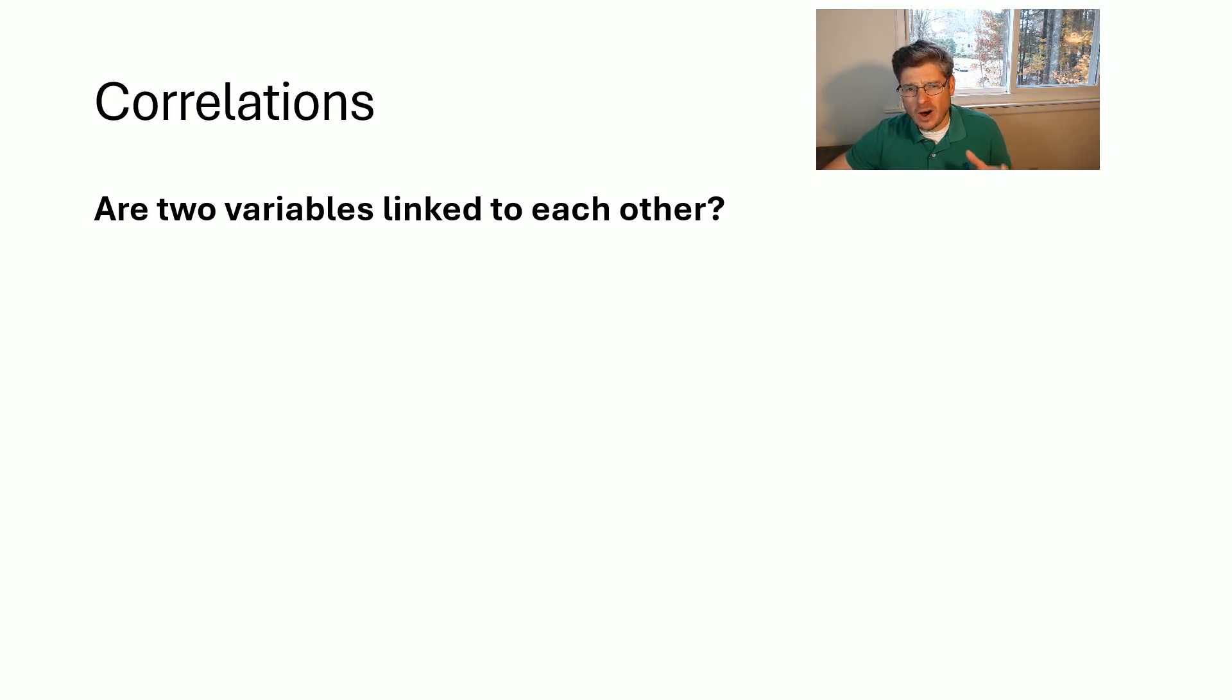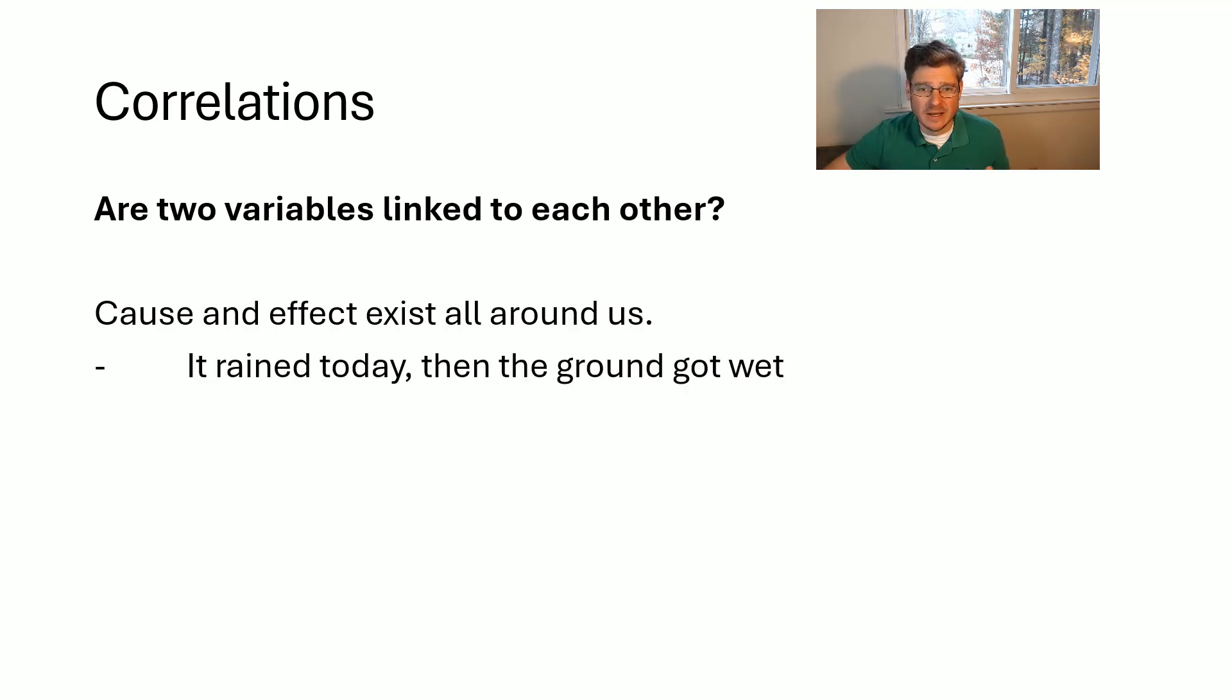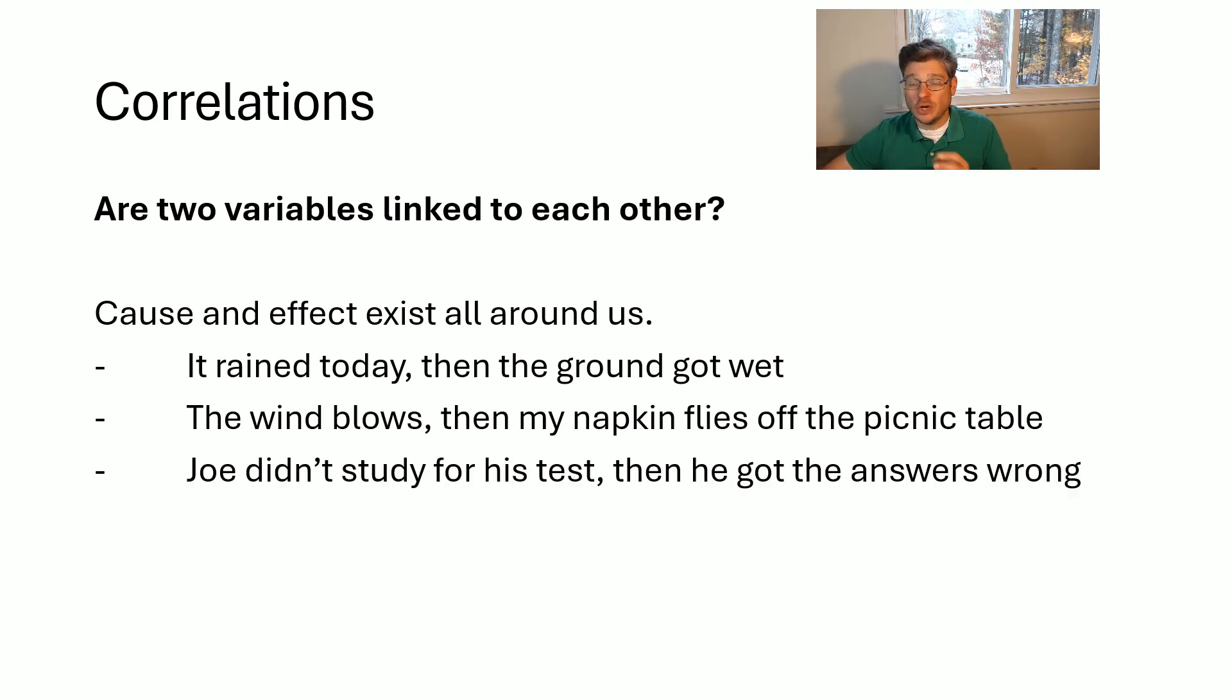Now, how can two variables be linked to each other? Well, we kind of see this all the time because cause and effect exists all around us constantly. If it rained today, then the ground got wet. We have a cause and then an effect. The wind blows, and then my napkin flew off the picnic table. We have a cause and then an effect. Joe didn't study for his test, then he got the answers wrong. There's a cause and then there's effect.